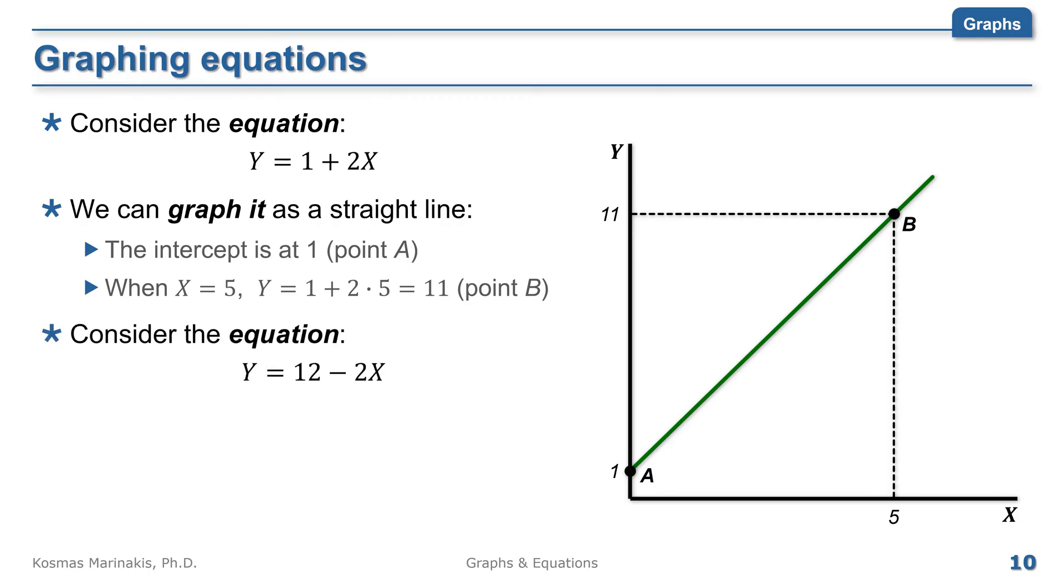Consider the equation y equals 12 minus 2 times x. We can also graph it as a straight line in the same graph. The intercept is at 12. We will call this point C. For x equals 5 again, y equals 12 minus 2 times 5 equals 2, which yields our second point. Let's call this point D.